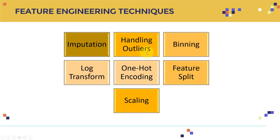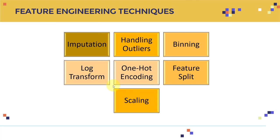What feature engineering techniques are available? There are many, and we'll cover as many as possible to prepare you for the exam. These include: imputation, handling outliers, binning, log transform, one-hot encoding, feature split, scaling, and many more. We will cover all of these at minimum in the next couple of lectures, and additional techniques may be added if they appear on the exam.